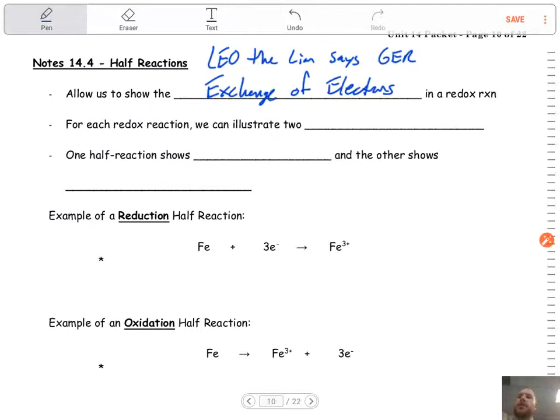For each redox reaction, we can illustrate two half reactions. I guarantee you will have to write a set of half reactions on your Regents exam. They always ask you to do that, whether it's multiple choice or short answer. Most likely it's going to be short answer. Make sure you know how to do this. This is something you need to practice - it's such a hot topic that they put on the Regents.